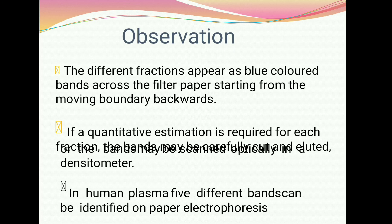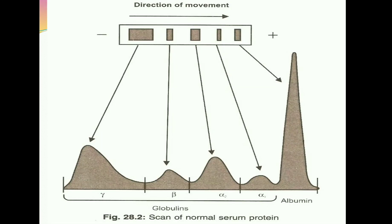In human plasma, five different bands can be identified on filter paper electrophoresis. When we separate proteins from human plasma, we see these five different bands — these are globulin and albumin fractions of different types. By placing the point of application, we can see the different bands migrate to different positions on the filter paper.